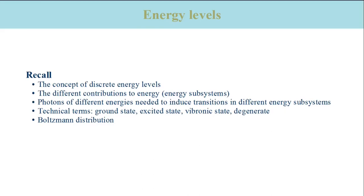Summarizing this section, we have discussed a number of important concepts: the concept of discrete energy levels, the concept of different contributions to the total energy giving rise to different energy subsystems, and that these subsystems have different energy gaps. Therefore we need photons with different energies to induce transitions in different energy subsystems, meaning the spectral range used in our experiments is determined by the energy subsystem we want to study. We also discussed technical terms like ground state, vibronic state, and degenerate states, and we discussed the Boltzmann distribution.